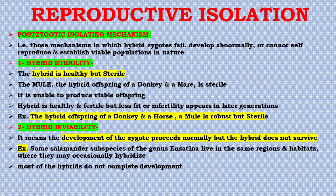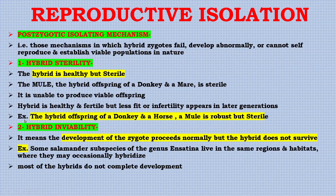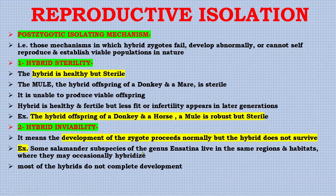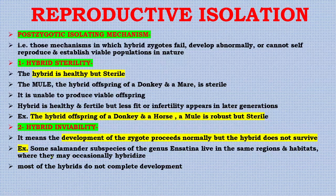Another post-zygotic mechanism occurs when the hybrid is healthy and fertile but less fit, or infertility appears in later generations. The hybrid offspring of a donkey and a horse — the mule — is robust but sterile. Next is hybrid inviability, where the development of the zygote proceeds normally but the hybrid does not survive. For example, some salamander subspecies of the genus Ambystoma live in the same region and habitats where they may occasionally hybridize, but most of the hybrids do not complete development.